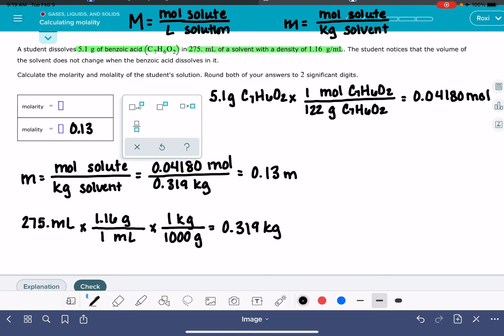Now for the molarity, the molarity calculation is going to be moles of the solute divided by the volume of the whole entire solution. The volume of the whole entire solution is going to come from the combined volume of the benzoic acid and the solvent.